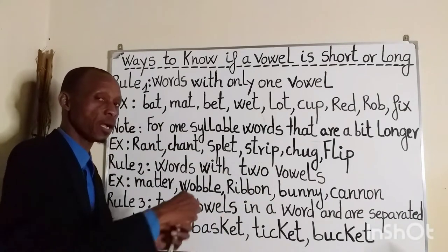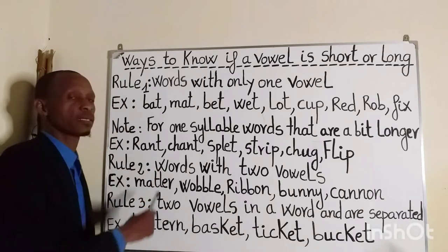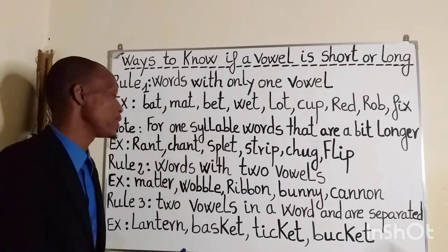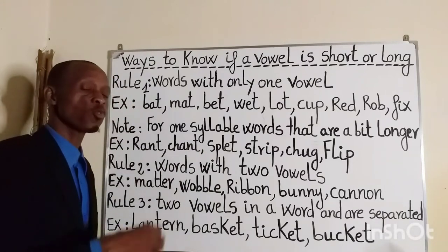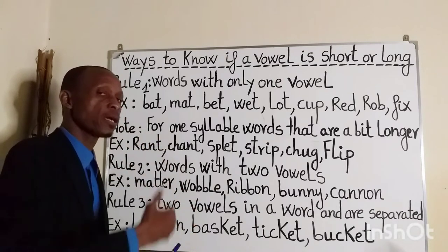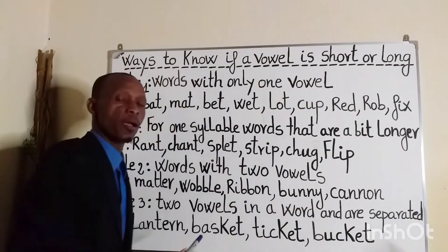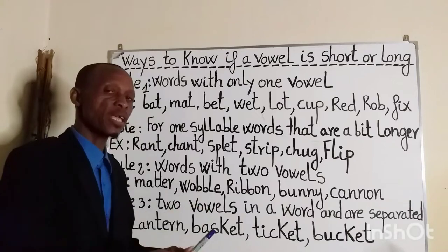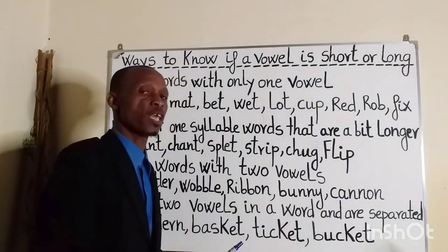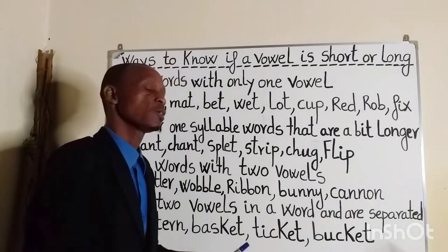This rule can also apply to one-syllable words that are a bit longer. Examples: 'rant,' which means to speak or shout angrily; 'chant,' which means to keep singing or shouting a word or phrase many times; 'slept'; 'strip,' which means to remove something from somewhere; 'plug,' which means to keep going or drink quickly; and 'flip,' which means to turn over.